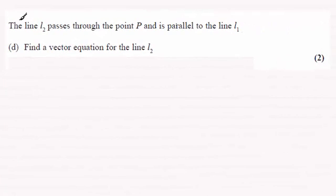Hi there. Now for the next part, part D, we're told that the line L2 passes through the point P and is parallel to the line L1. We need to find a vector equation for the line L2.